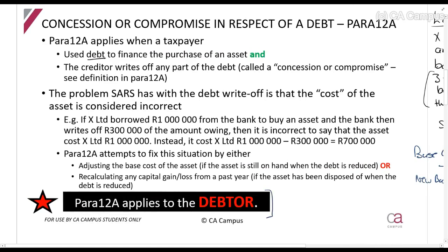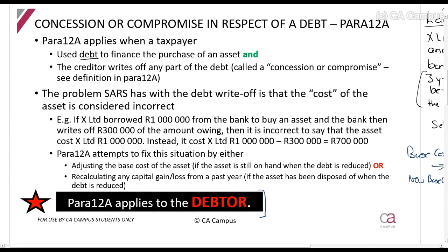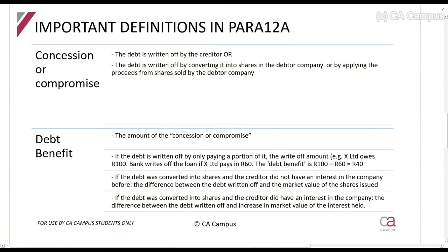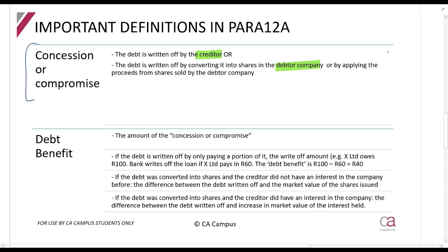This section applies to the debtor - the person who is owing the money to someone. There are some important definitions in paragraph 12A. It applies to a concession or a compromise, which is a situation where debt is written off by the creditor, or where the debt is converted into shares in the debtor company, or if the debtor company sells shares and then pays using those proceeds. So if you sell me land, I owe you money, and I can't pay you, I can offer you shares in my company as payment - that is also a debt concession.